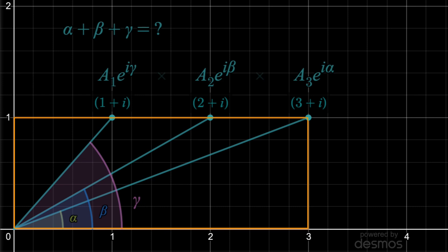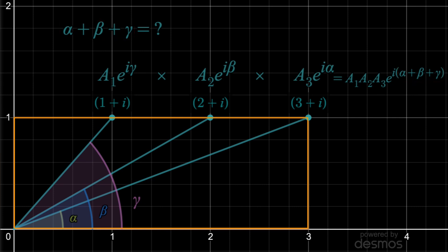If we multiply these all together, we get a single complex number where the amplitudes have been multiplied and the angles sum together — just basic rules of exponents. And this is what we're after. So to find it, I'll just multiply the numbers in their rectangular form instead, where we get 10i. Since that point lies on the imaginary axis, the phase would be 90 degrees, or pi over 2 radians, which is the answer to our question.